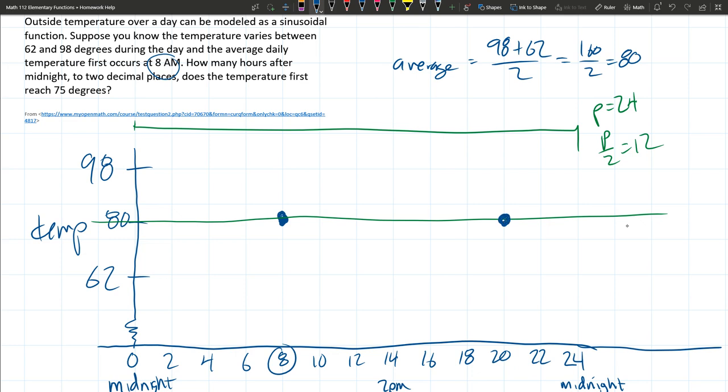And the assumption I made was daytime's hotter than nighttime. And that means your high daytime is going to occur directly in between these two numbers. And that will happen right here, and that's at 1400 hours or 2 PM.